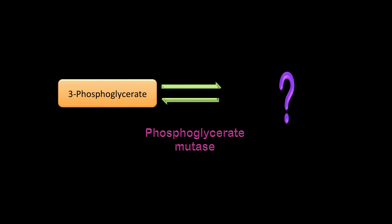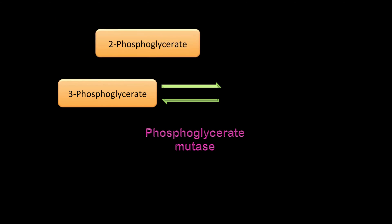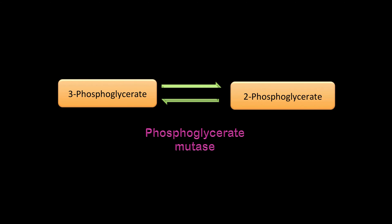3-phosphoglycerate: the enzyme is phosphoglycerate mutase, and the product is 2-phosphoglycerate. We're almost at the end.